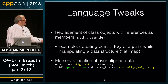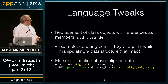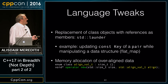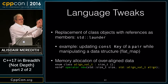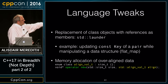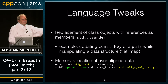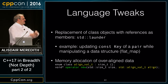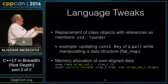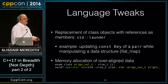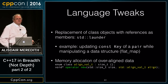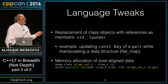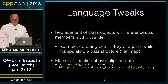The final language corner: memory allocation for over-aligned data. When calling operator new, you can now do new with a size and alignment using the new `align_val_t` enum class. That covers the full set of core language changes — just in time to start on the library.